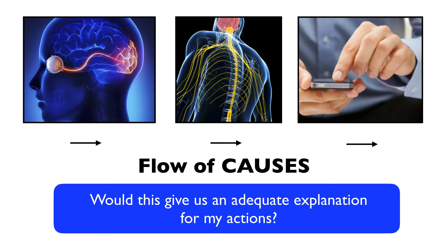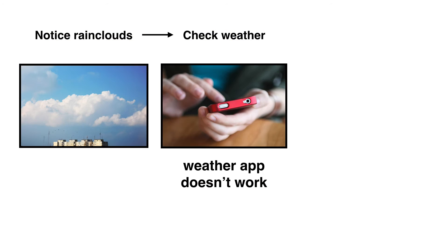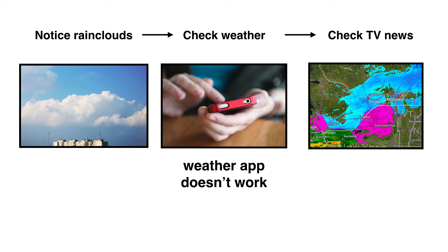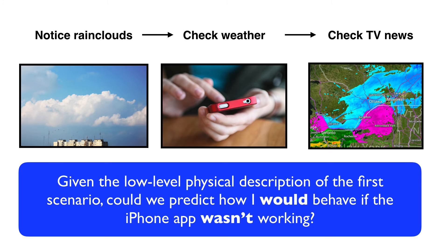There are several reasons for this, but one of the most important has to do with the fact that part of what it means to understand this kind of behavior is to understand not only what did happen, but also what would have happened under slightly different conditions. For example, what if I saw the rain clouds and went to my phone, but the weather app wasn't working? Let's say I look at the phone, put it back in my pocket, and then turn on the TV to the local news channel to check the weather report. Now at a neurological and biomechanical level, this sequence of events will be very different from the first one. If all you had access to was that original causal mechanical sequence, as complex and complete as it was, could you have predicted how I would behave if the iPhone app wasn't working? Could you have predicted that I might proceed to turn on the TV to check the local news channel?